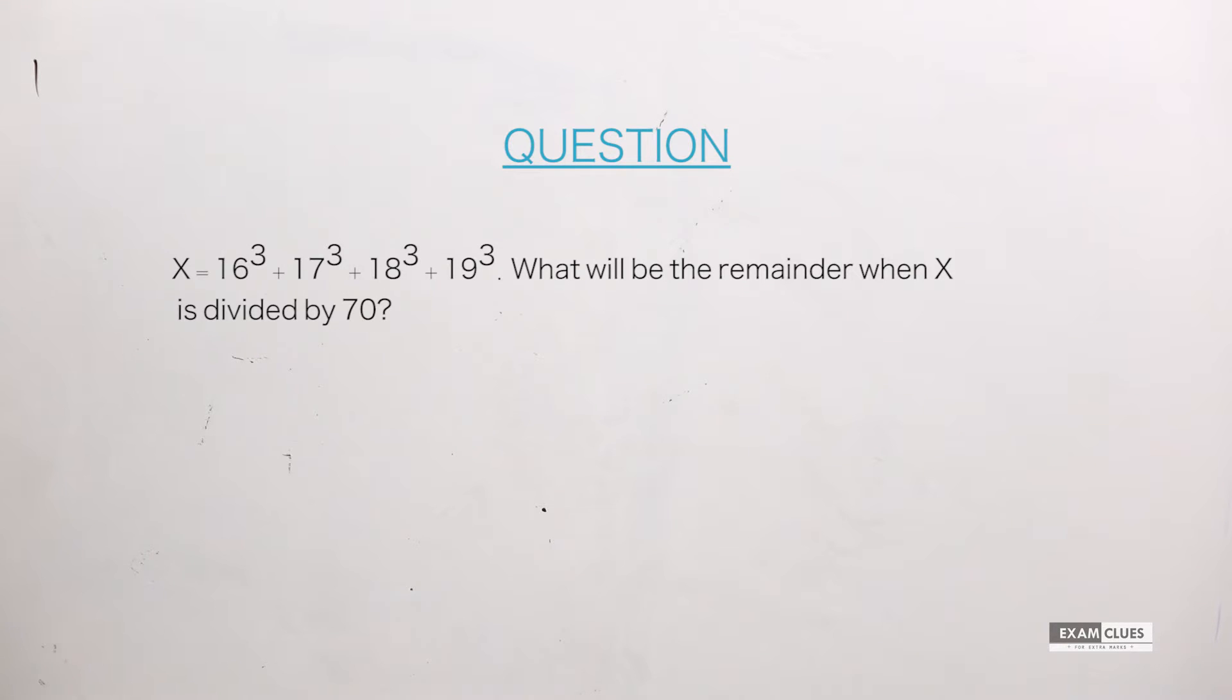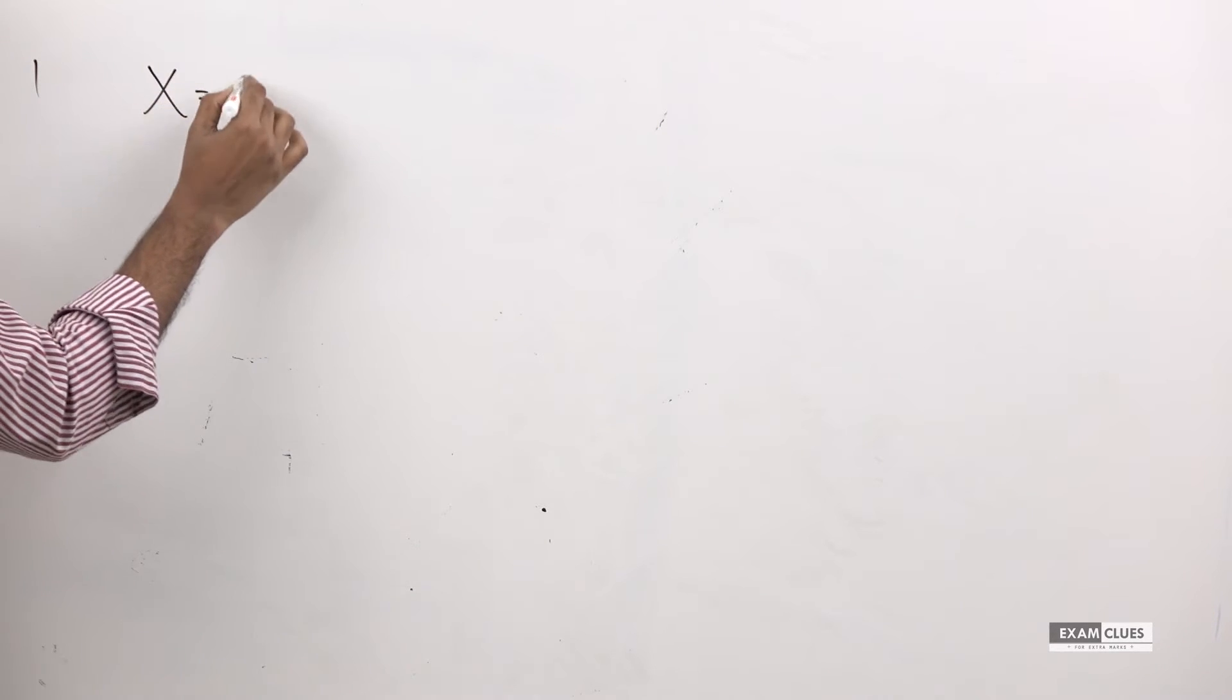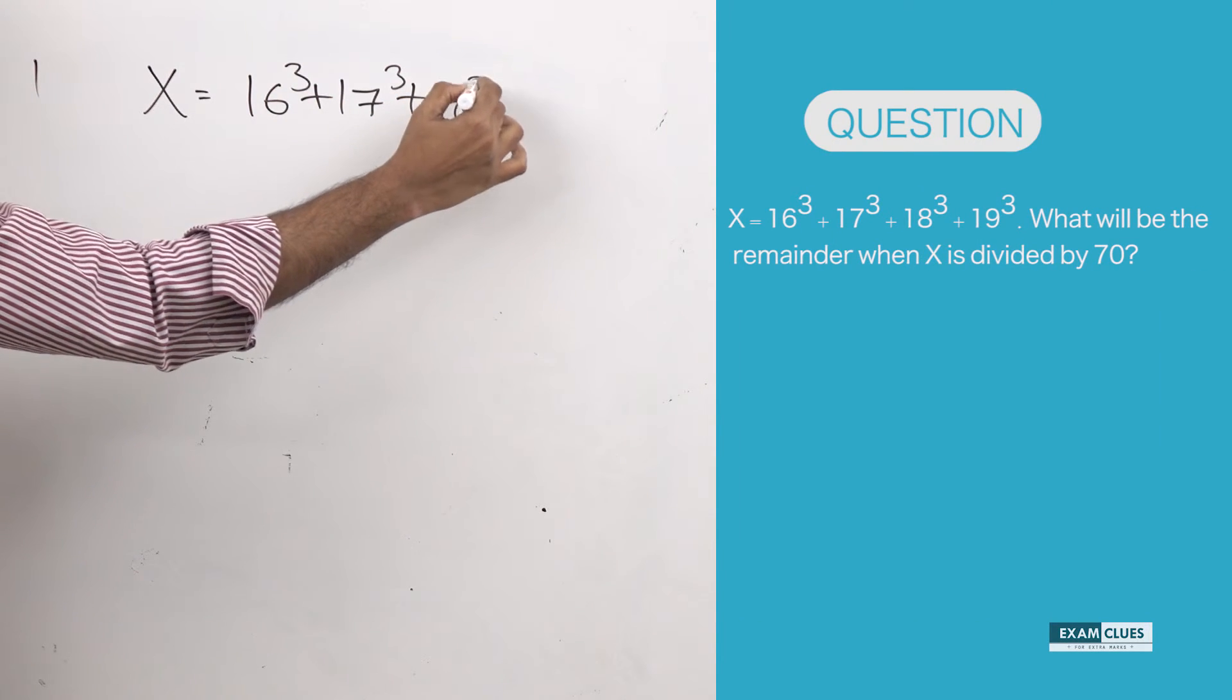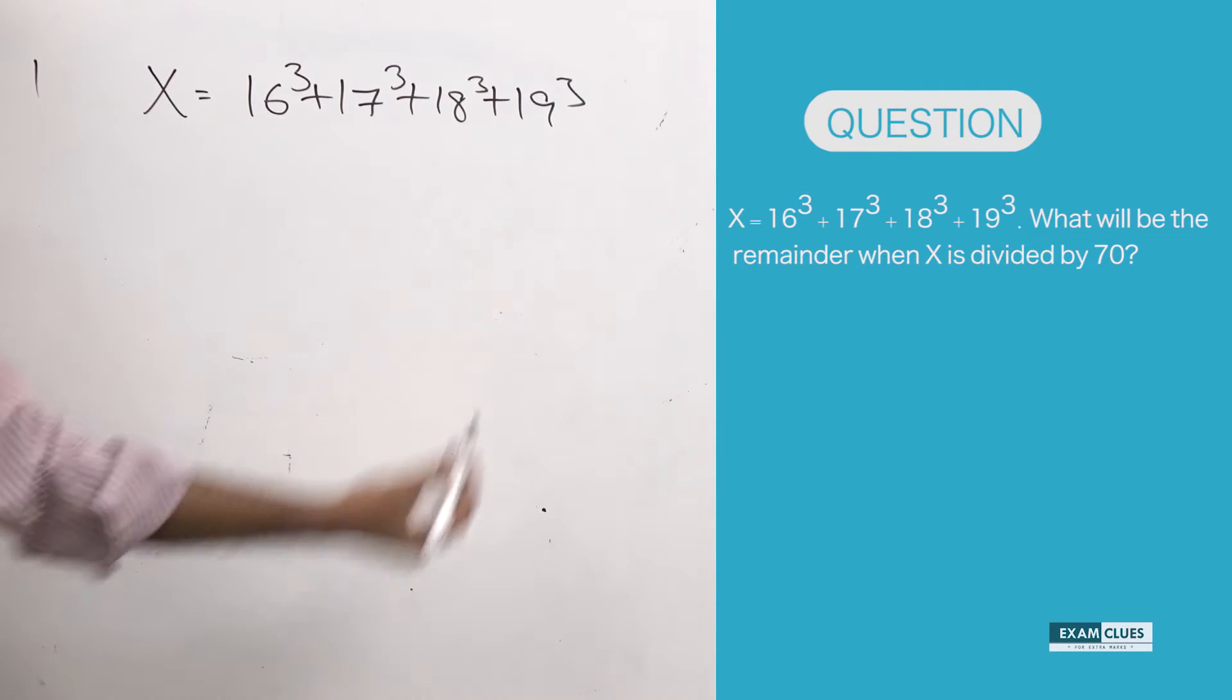I am repeating it: X is equal to 16 cube plus 17 cube plus 18 cube plus 19 cube. What will be the remainder when X is divided by 70? I am writing it here: X equals 16 cube plus 17 cube plus 18 cube plus 19 cube.